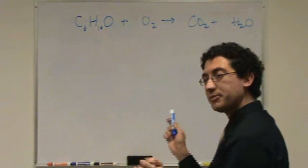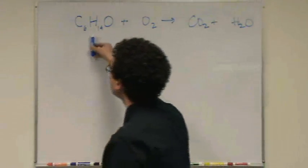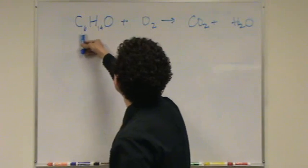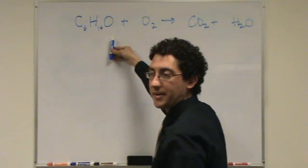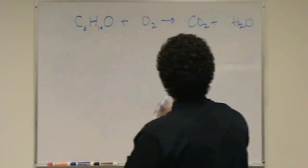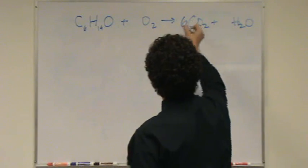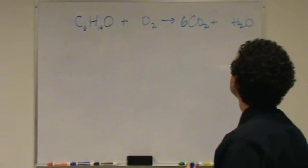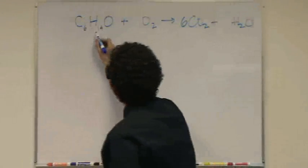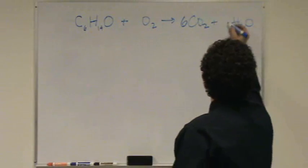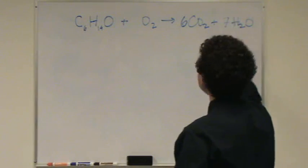So let's balance this. These I always balance the same way. I will start here and march on through carbon, hydrogen, oxygen, in that order. Carbon for 6, so 6 goes here. Hydrogen, 14. 7. Yeah, that's always the easy part.